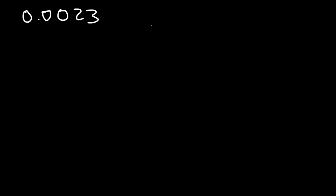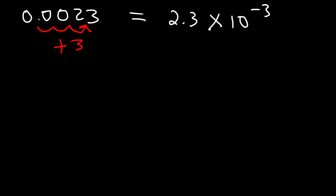What about small numbers? For example, 0.0023. We still want the decimal to be between the 2 and the 3, but this time I'm going to move it to the right. I need to move it 3 spaces to the right, so this is going to be 2.3 times 10 to the negative 3. A negative exponent will always be associated with very small numbers; a positive exponent with very large numbers.